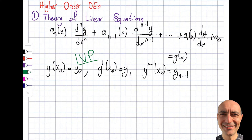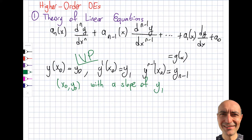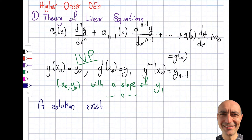What this also signifies is that I have a solution which passes through the point (x₀, y₀), and the slope of that solution is y₁. I'm interested in a solution which is unique and also exists. So the two conditions I need are: the solution exists, and the solution is unique. I want to highlight that what I'm going to write next applies only for IVP.